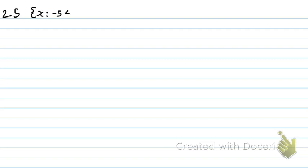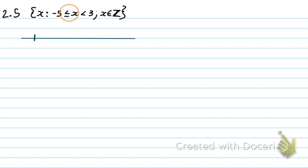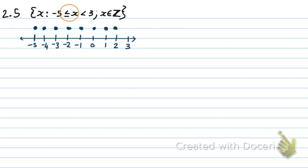Number 2.5: represent the following on a number line. They give set builder notation: x is greater than or equal to negative 5 and smaller than 3, with x an element of integers. So x is between negative 5 and 3, negative 5 included and 3 excluded, integers only — meaning I use separate dots. I draw the number line: negative 5, negative 4, negative 3, negative 2, negative 1, 0, 1, 2, 3. I draw colored dots from negative 5 through 2, and an open dot at 3 because it's excluded.